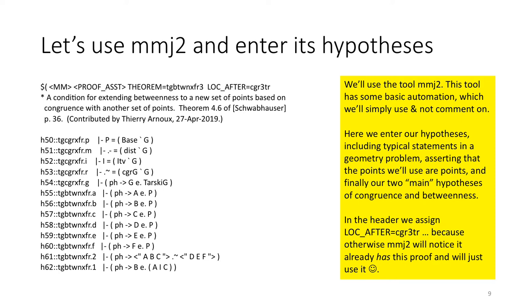So let's use MMJ2 and enter its hypotheses. From here on, when we have yellow boxes, I'm just going to simply read the yellow box text. So we'll use the tool MMJ2. This tool has some basic automation which we'll simply use and not comment on. Here we enter our hypotheses, including typical statements in the geometry problem, asserting that the points we'll use are points, and finally our two main hypotheses of congruence and betweenness.